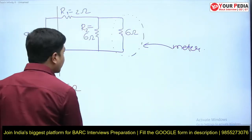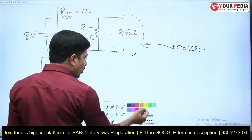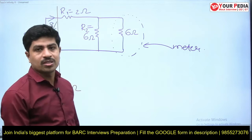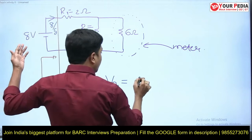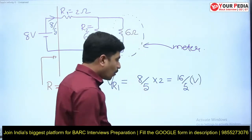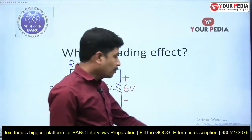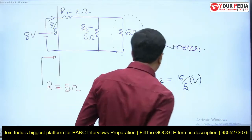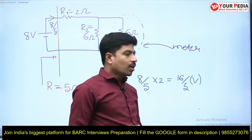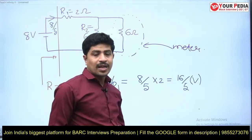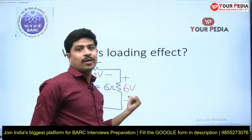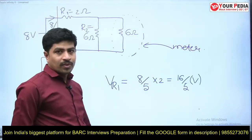Let's calculate with the meter. 6 in parallel with 6 is 3, and 3 + 2 = 5 ohms total. The current flowing in this circuit is 8/5 amperes. The voltage across R1 is V_R1 = (8/5) × 2 = 16/5 volts. Without the meter it was 2 volts — with the meter it has increased. The current also got increased from 1 ampere (without meter) to 8/5 amperes.